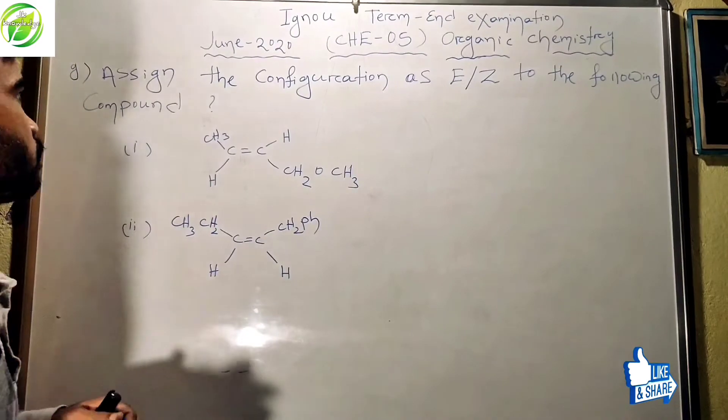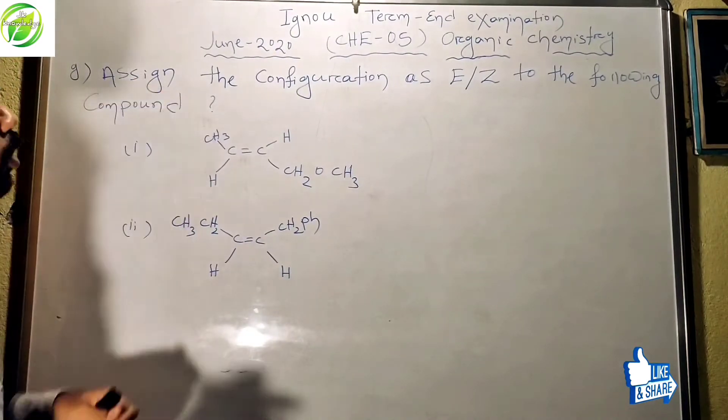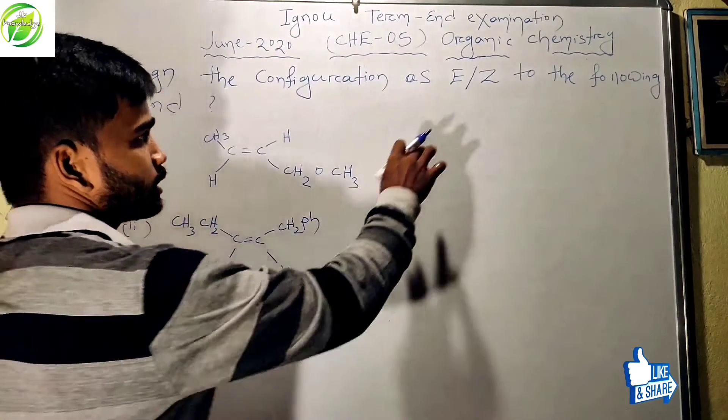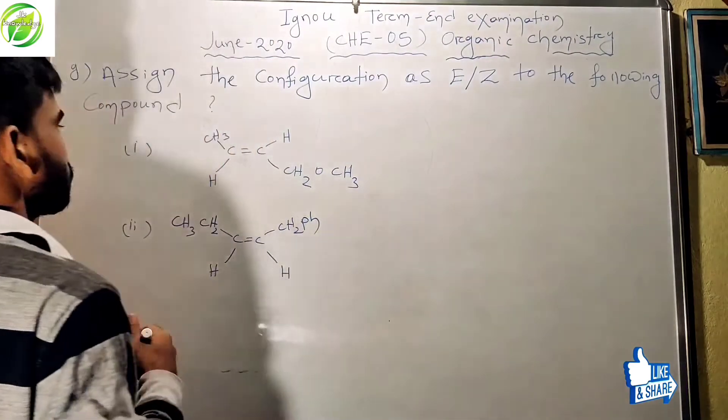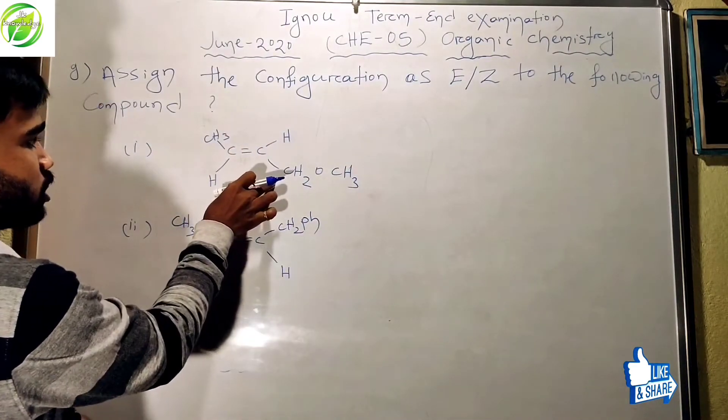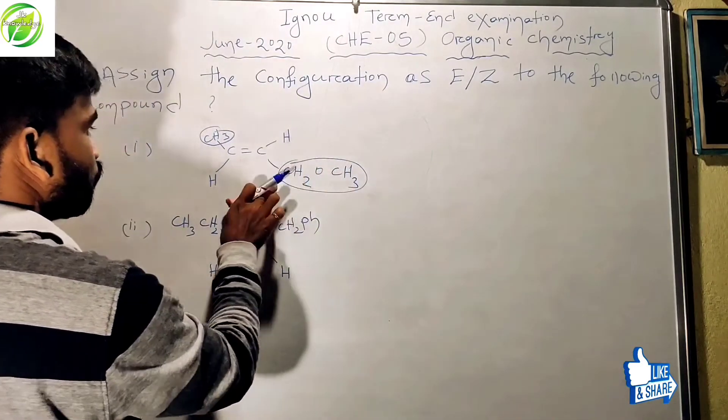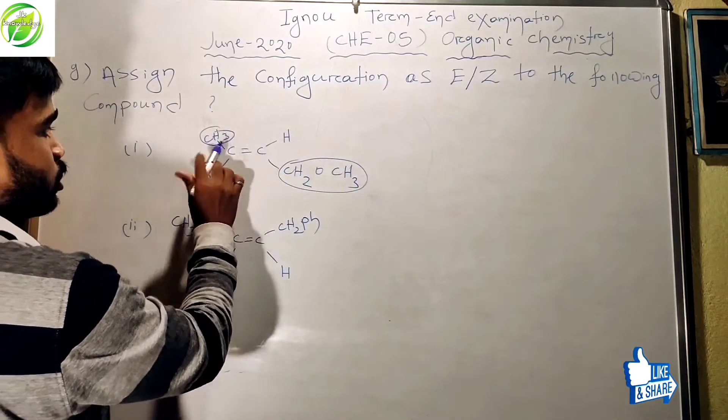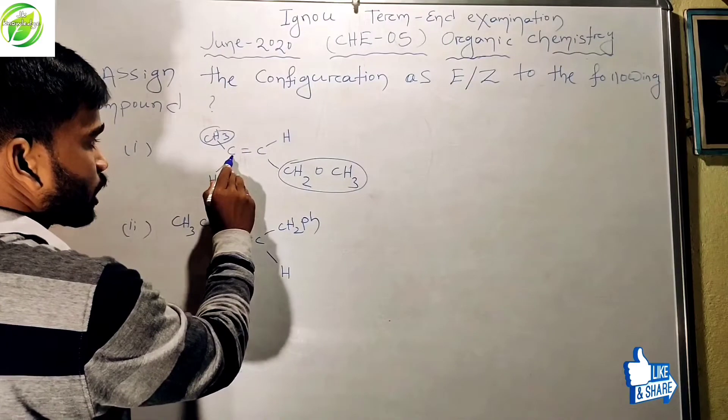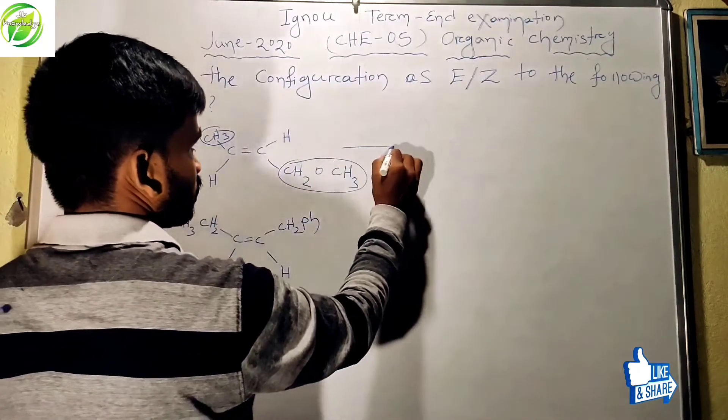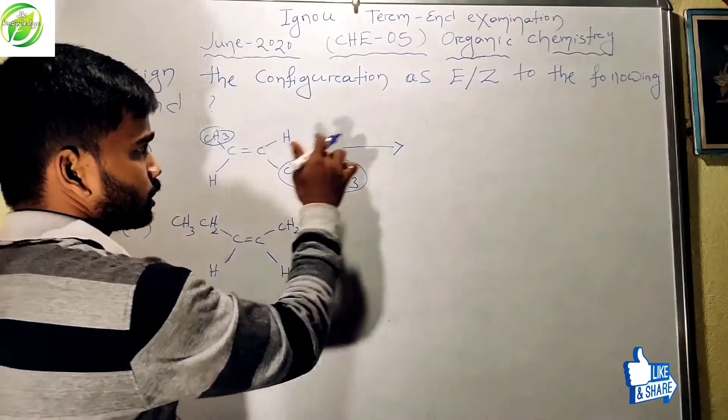Friends, the next question is: assign the configuration as E and Z to the following compounds. This compound, you clearly see, these two higher priority groups are present on opposite sides of this carbon-carbon double bond. So the resultant configuration is E configuration.